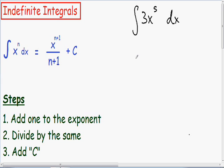I wrote the steps for you on the bottom left part of the screen and the first step is we want to add one to the exponent. So since we have 3x to the fifth in the integral, after we integrate we are going to add one to the exponent, so instead of having a 5 exponent we are going to have a 6 exponent.